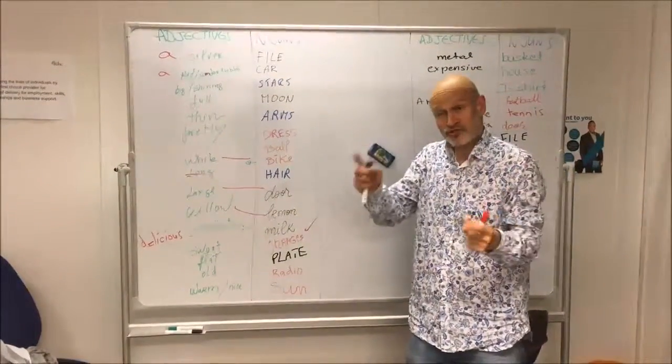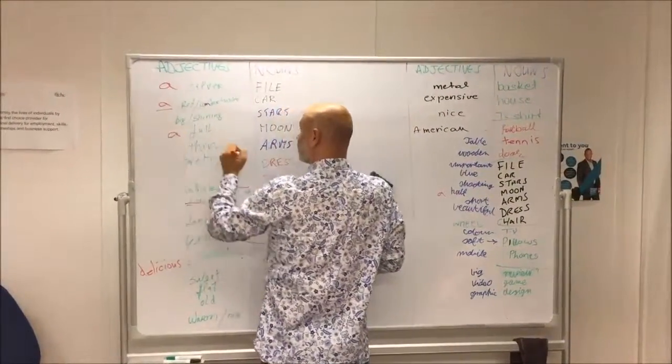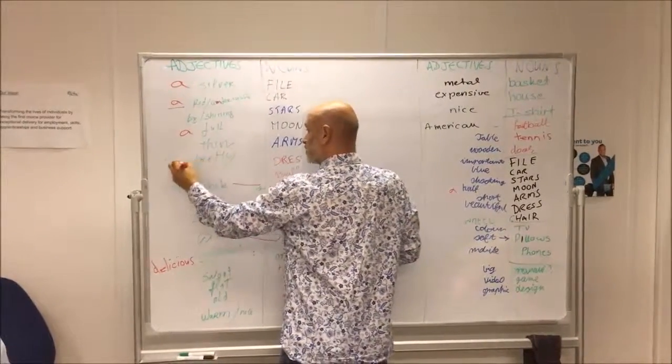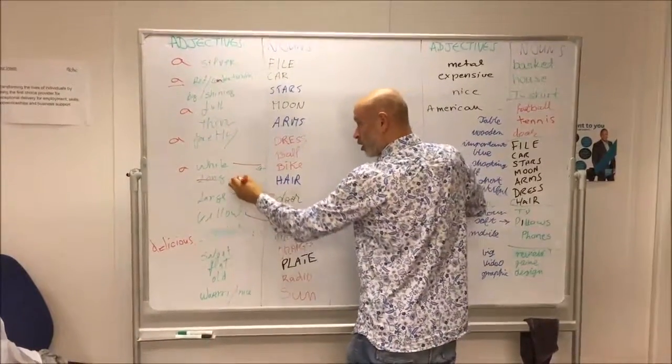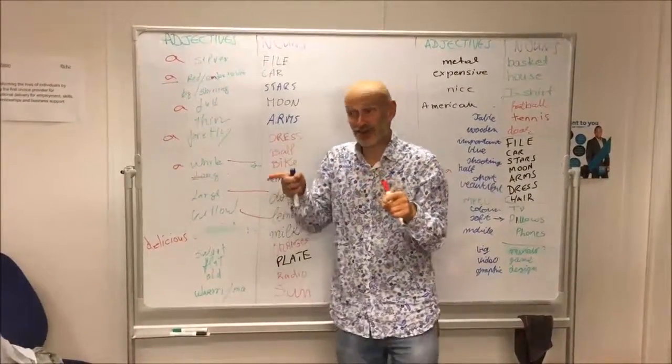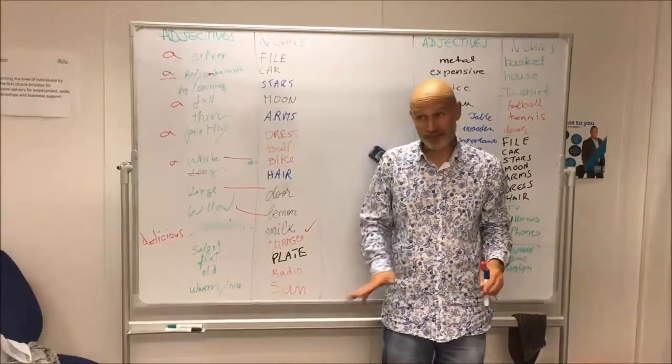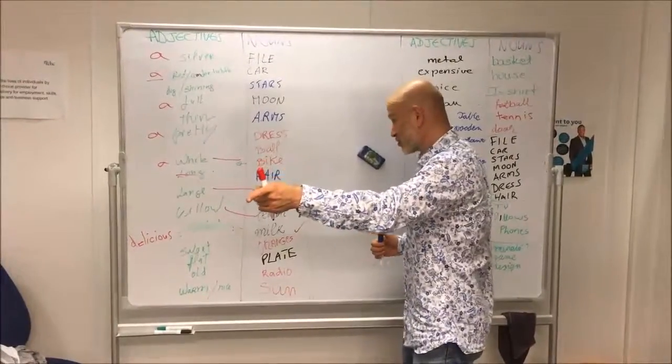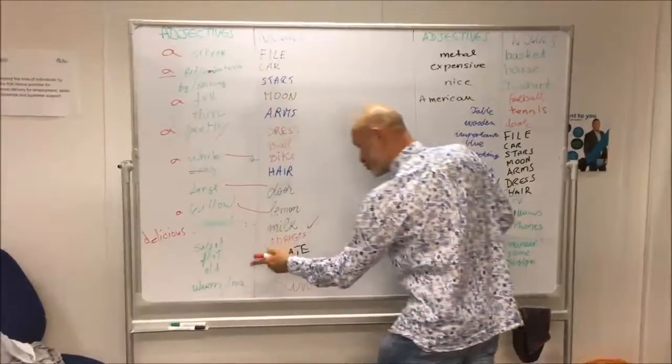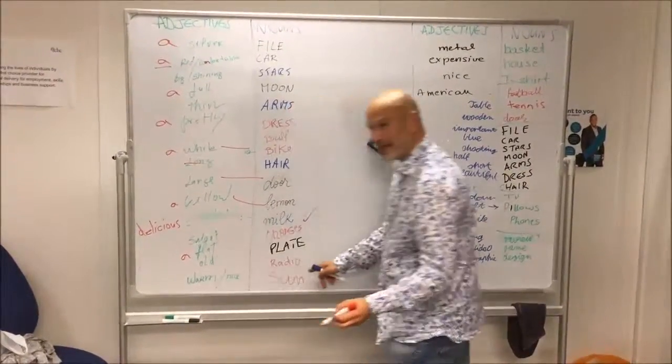So remember that for singular we need 'a' - a full moon, a pretty dress, a white boy or a white bike. Long hair - now hair, you're right, hair is uncountable. For uncountable nouns, no article. So, thank you for shaking your head. A yellow lemon, sweet oranges, a flat plate. What about the old radio?